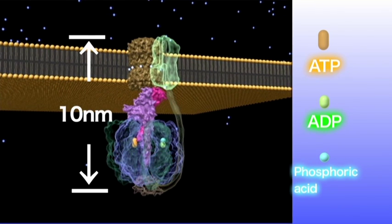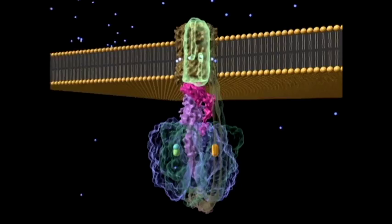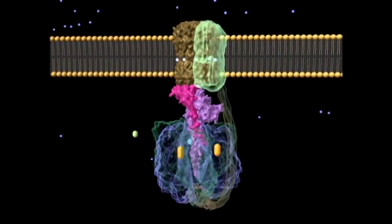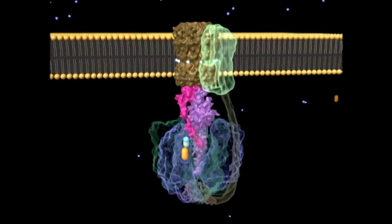The size of ATP synthase is 10 nanometers, or 1/100,000th of a millimeter. It's been discovered that each cell contains numerous rotating nano-size factories producing energy.